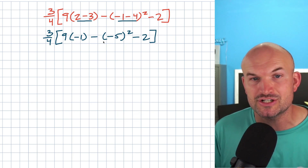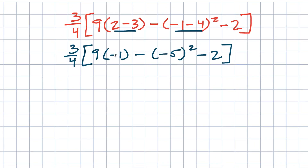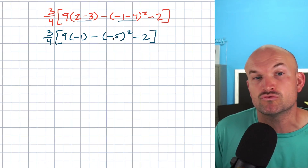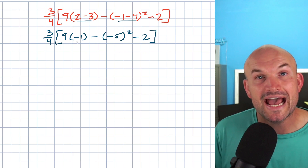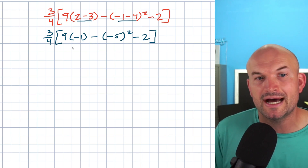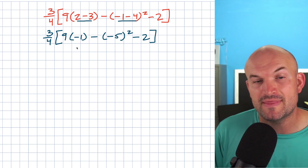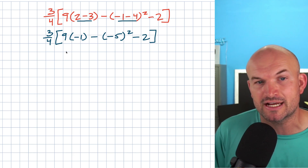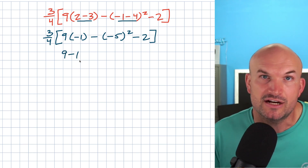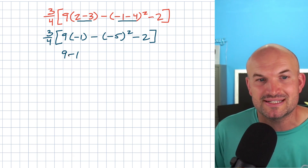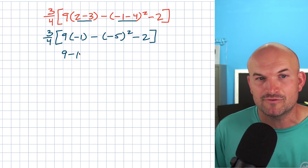Now we do have two operations that will get rid of them — we have nine times the parentheses and then we have these parentheses squared. Let's take a look at why, if we did not include parentheses, that'd be a mistake. If I didn't put parentheses around this negative one, I would have an expression nine minus negative one. And you probably would not remember this was nine times a negative one.